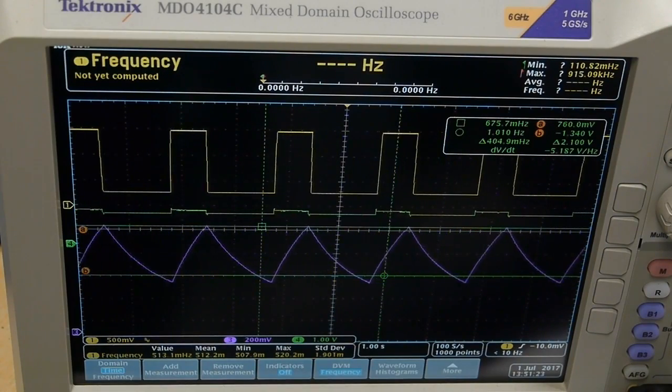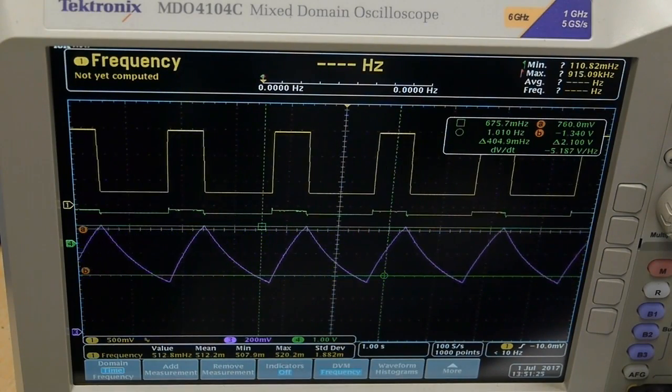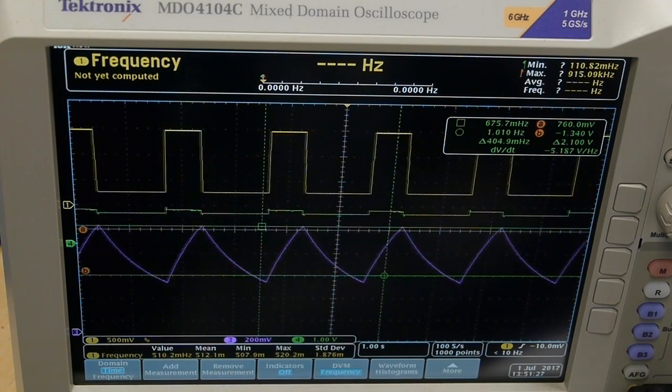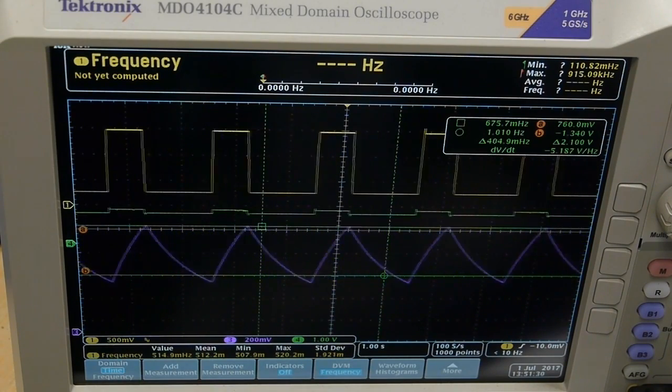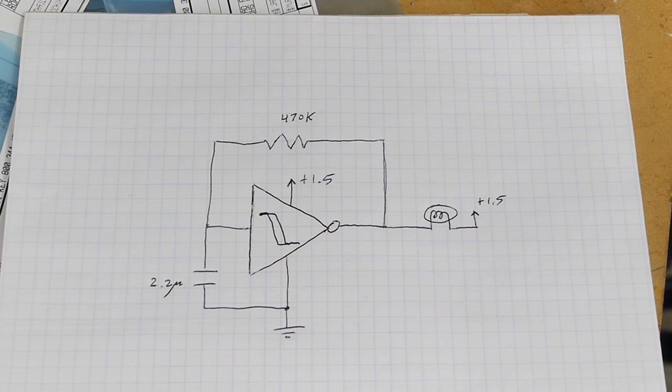But then this node over here is the purple trace on the oscilloscope. You can see that that node between the resistor and the capacitor is varying voltage slowly over time as it's charging and discharging the capacitor.